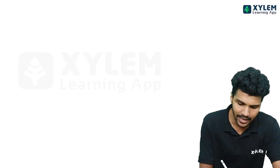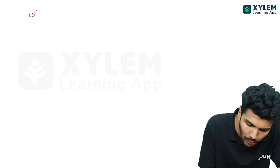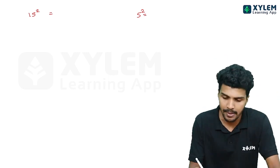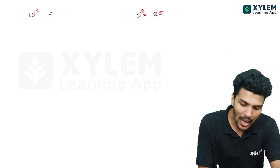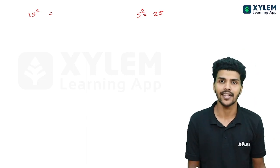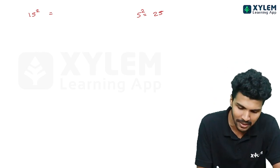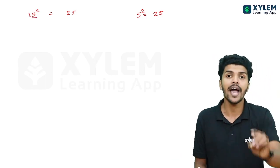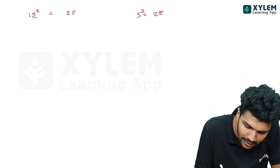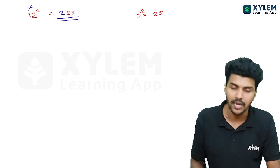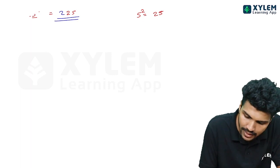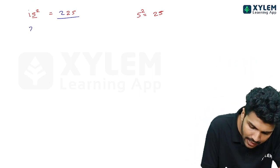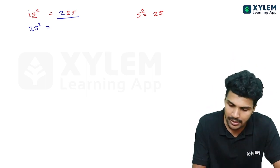This is how you can work out a number ending in 5 squared. 5 squared is 25. For any 2-digit number ending in 5, the answer will end in 25. For example, 15 squared: take 1, multiply by 1+1 which is 2, giving 2, then append 25 — so 15 squared is 225.